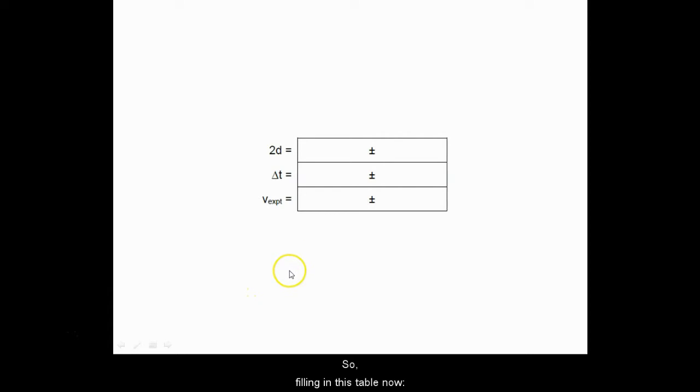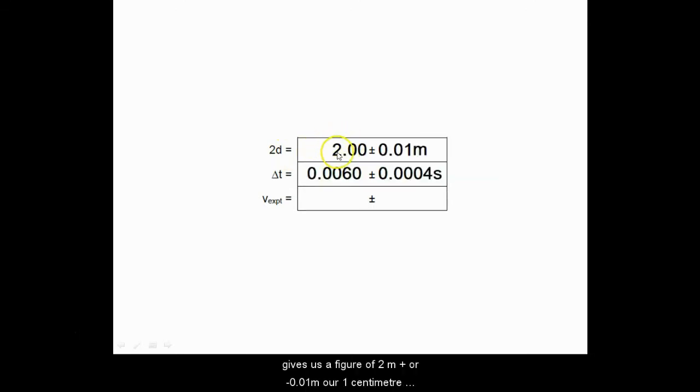So filling in this table now, 2D here is two times the length of the tube. That gives us a figure of two meters plus or minus 0.01 meter, our one centimeter uncertainty. For our time, we've got a figure of 0.006 plus or minus 0.0004 seconds.